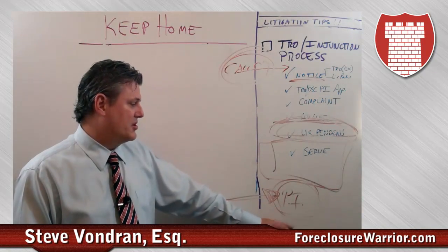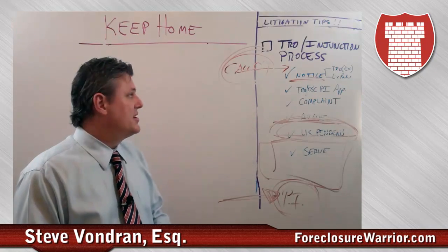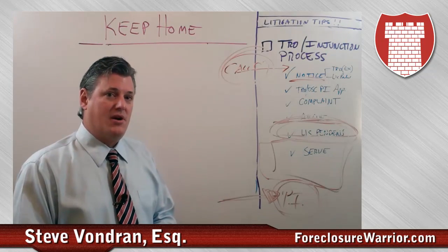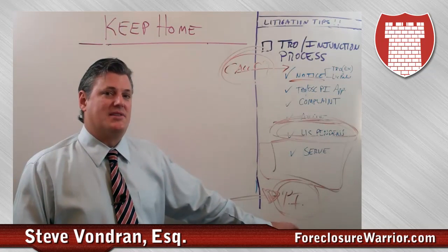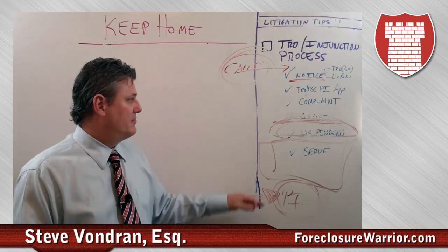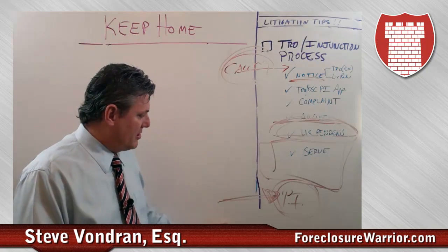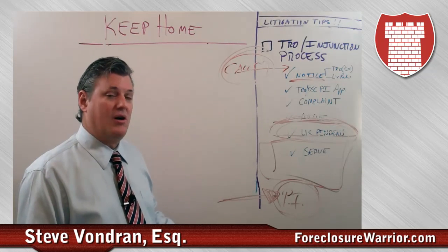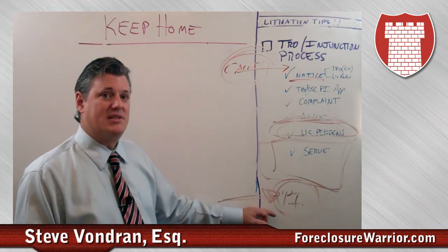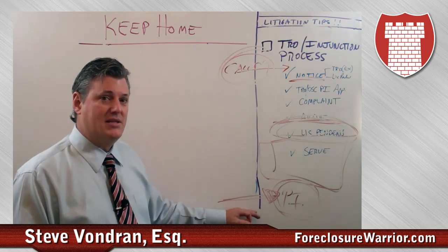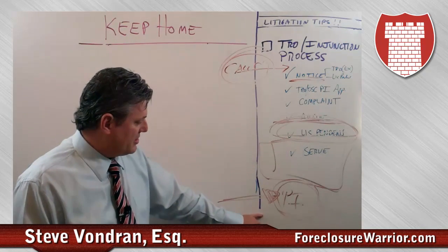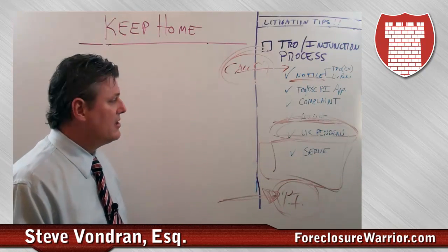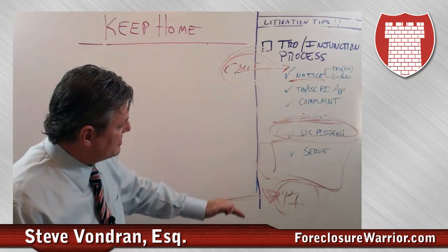The law is that the preliminary injunction won't issue until and unless the bond is posted, if a bond is required. This needs to be addressed in advance with your client — we're looking good, but the judge could require a bond. You need to at least call a few companies to see if anybody posts these civil injunction bonds. They're not easy to find. Have this on the radar, but typically that's the process.